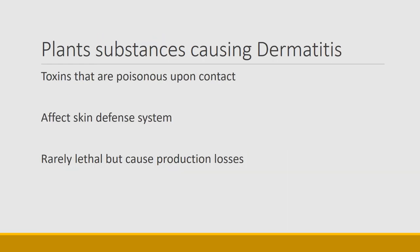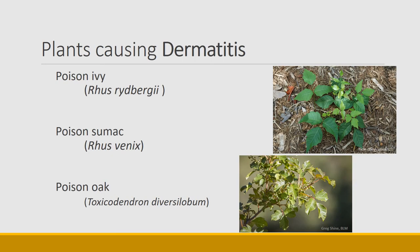A variety of dermatitis conditions can also be created when animals eat plants. Like poison ivy, the toxins are poisonous upon contact — they don't even have to go through the system. They affect the skin defense system and cause pain, so animals avoid them. They're rarely lethal, but they certainly can cause significant production losses and a lot of discomfort. Plants with severe dermatitis effects include poison ivy, poison sumac, and poison oak, and these affect nearly any mammal that comes in contact with them.